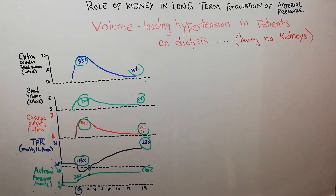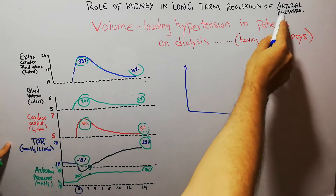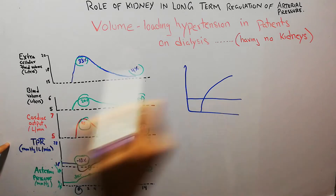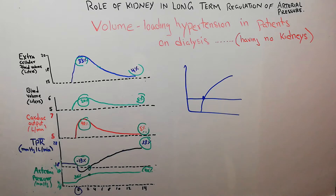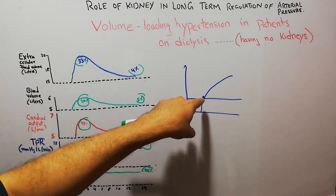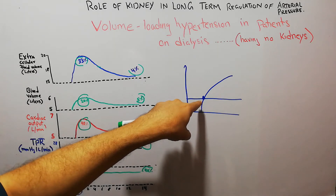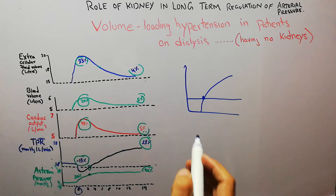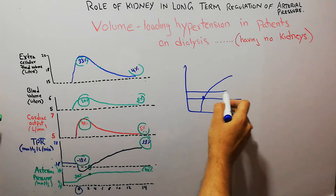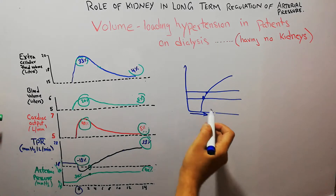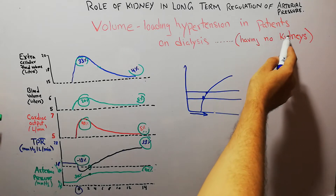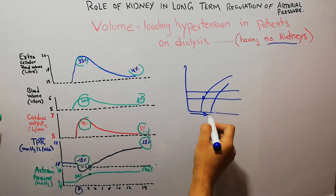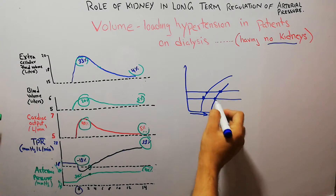We have established the two most important determinants of arterial pressure regulation: the renal function curve and the intake of salt and water. The point at which these two curves meet — where intake of salt and water equals excretion of extra fluid through the kidneys — is known as the equilibrium point. If intake increases or kidneys perform poorly, the equilibrium point shifts and arterial pressure increases toward a new level.